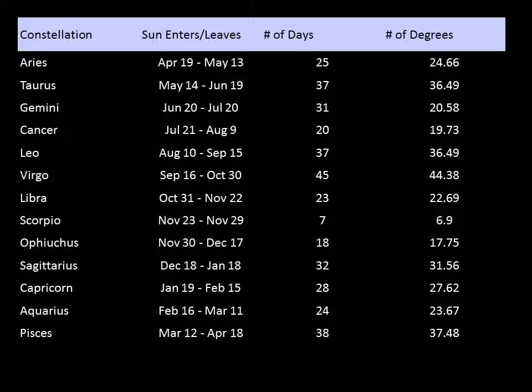The dates you see in the newspaper aren't really the days the sun is in that zodiac constellation. This table shows where the sun really is. Note also that there are 13 constellations, not 12. If your birthday happens to be between November 30th and December 17th, your star sign is actually Ophiuchus. My birthday is December 14th, so I'm a very proud Ophiuchian. Ophiuchus comes into the mix mostly because of the borders that were defined in 1928 by the International Astronomical Union.